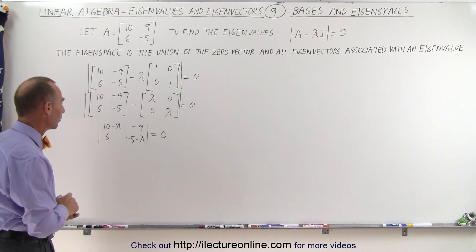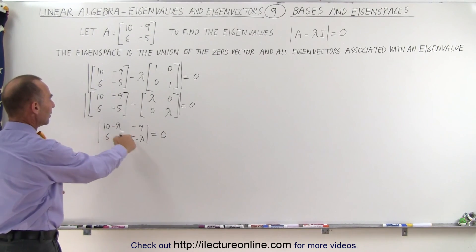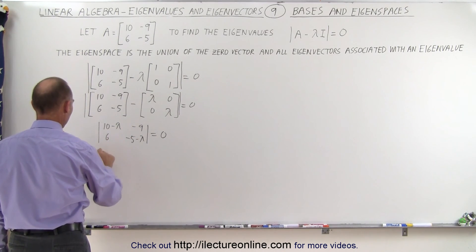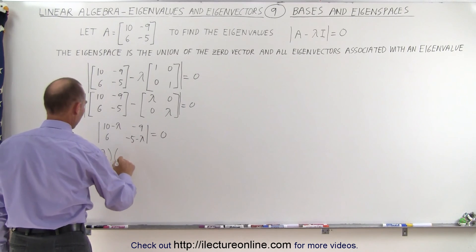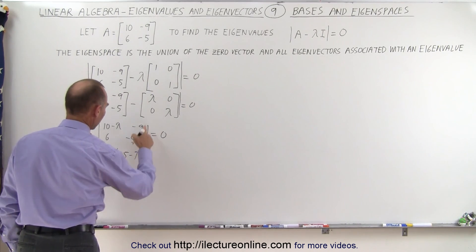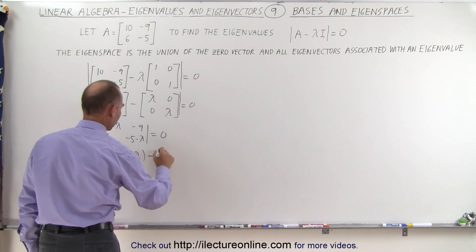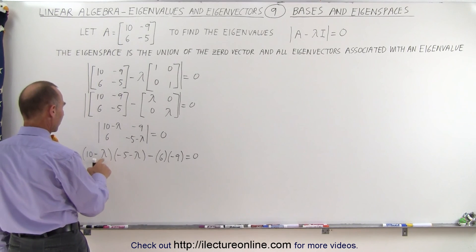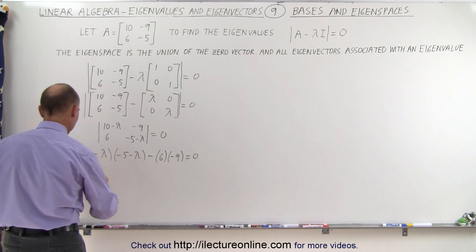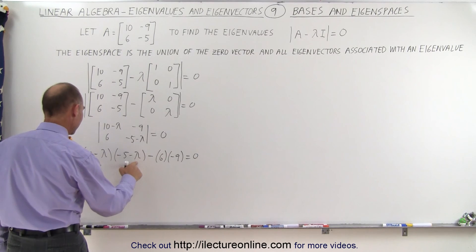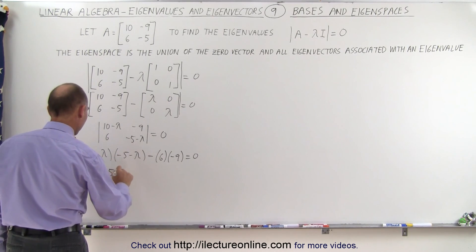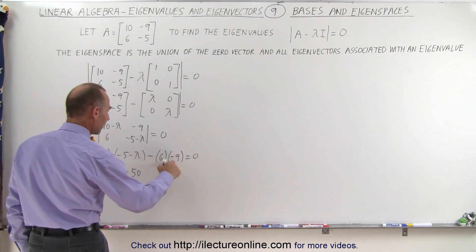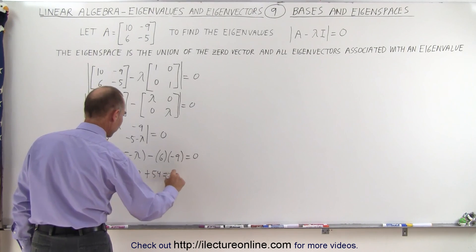That's essentially what we're trying to accomplish, and that will help us find the unknown lambdas — the unknown eigenvalues. So when we multiply these across, we get (10 − λ) times (−5 − λ), and now subtract from that the product of −6 times −9. Set that equal to zero. When we multiply the lambdas together, we get λ². We have −10 and +5, that's a −5λ, and then we have −50, and here we have minus times minus, that would be +54 equals zero.